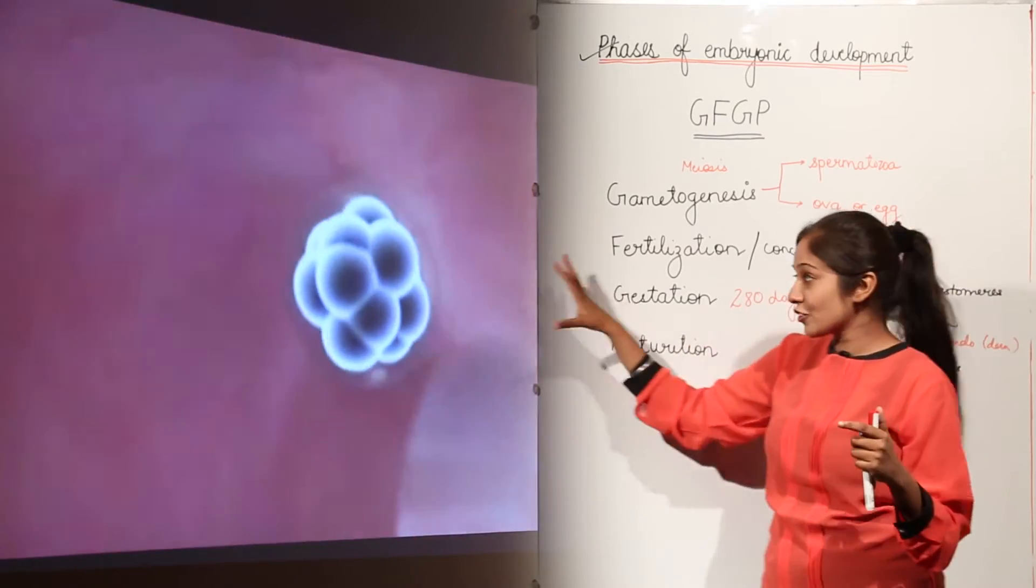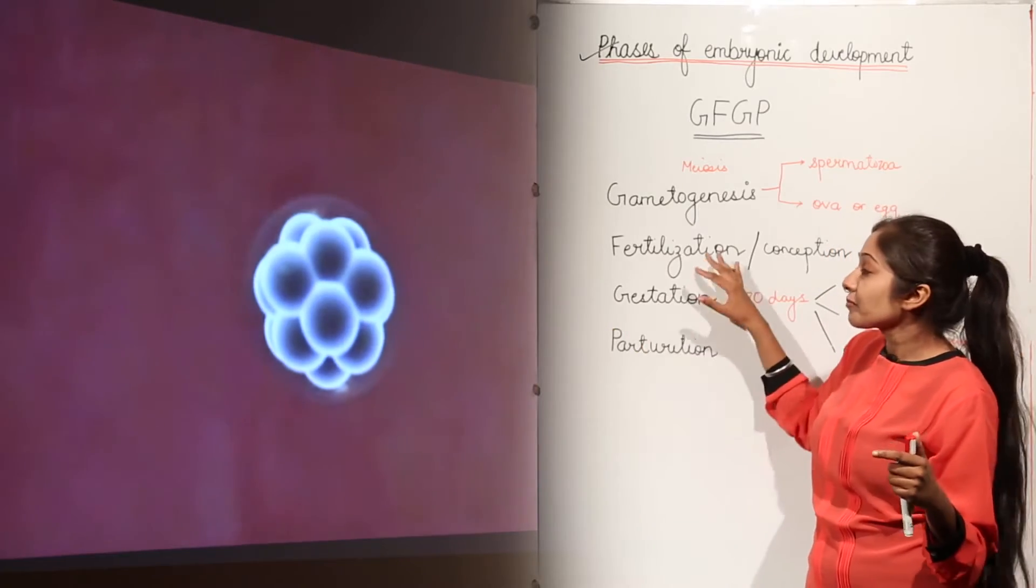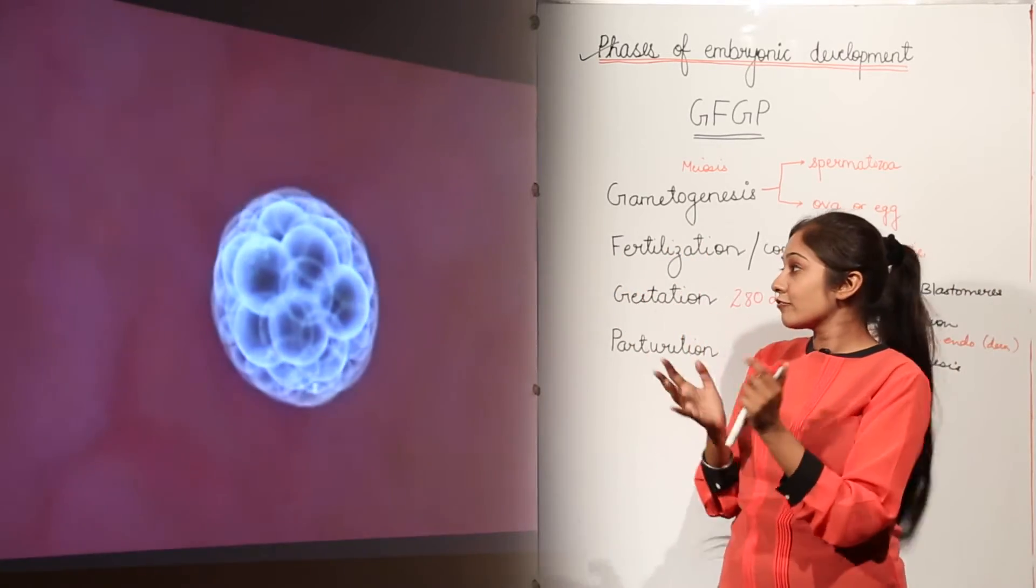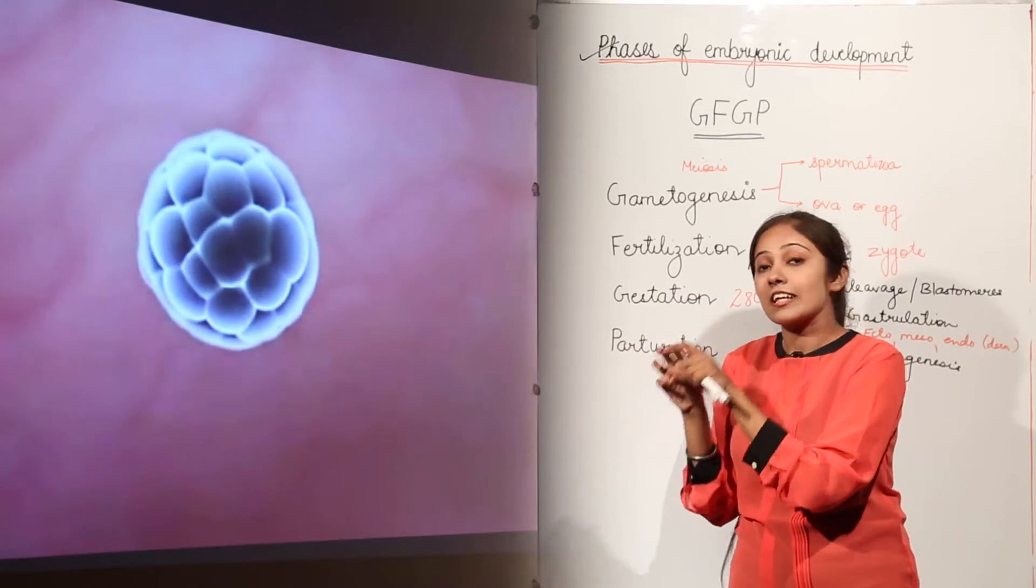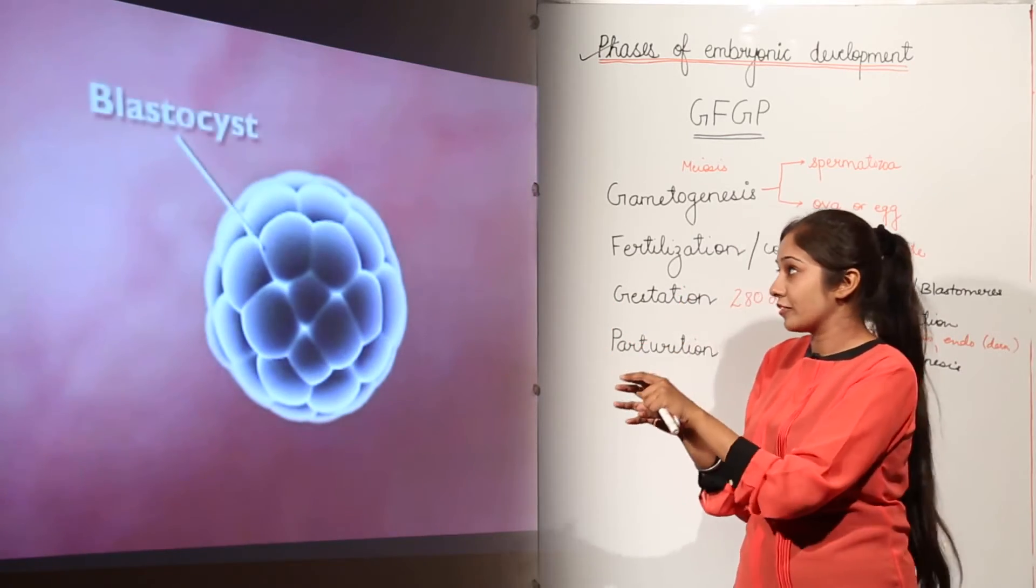Now this is a gestation period. After this we have a gestation period. But remember that when these blastomeres are formed, inside that blastomere we have some specialized cells that are going to form the whole body of the embryo.